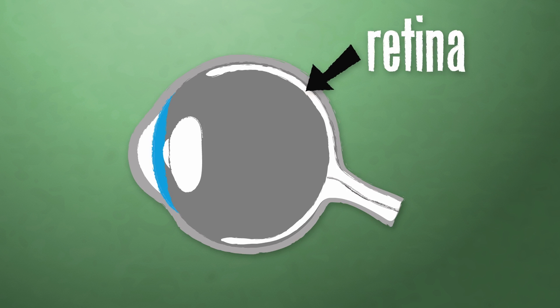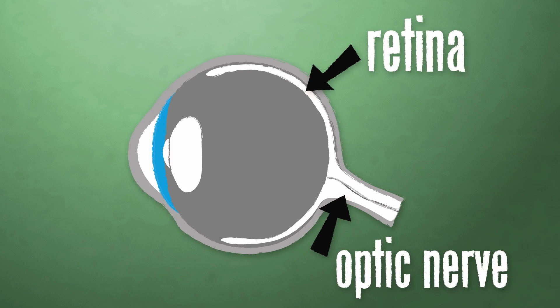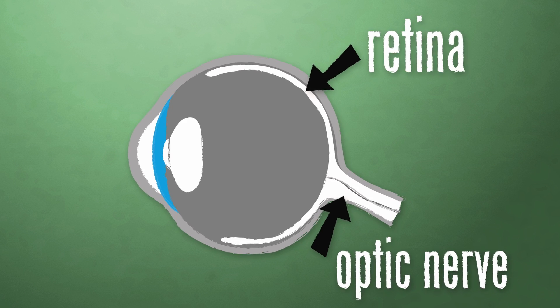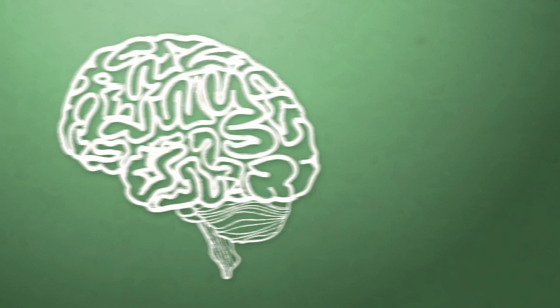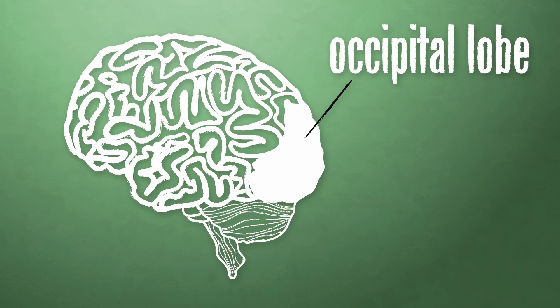You've got the optic nerve that takes the electrochemical signal that your retina translates the photons into and carries it up to your brain. Then you've got the occipital lobe, which is the first initial sorting center for visual stimulation. You put all these things together and something goes from 'I see a blob of color' to 'I see pizza.'